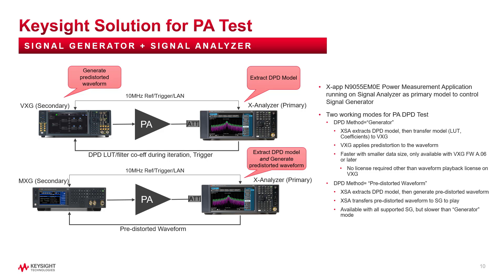Another working mode is called Pre-distorted Waveform mode. In this mode, the SA extracts the DPD model and generates the pre-distorted waveform, then transfers this pre-distorted waveform to the SG to play. This working mode is slower than Generator mode because it transfers the entire pre-distorted waveform between SA and SG. For more details, you can check out the demo video in this YouTube channel — the link is in the description box.